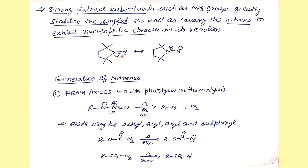When strong pi-donor substituents such as NH2 (an amine) are attached to a nitrene, they can donate electrons to the nitrene. This stabilizes the singlet nitrene, as a result of which it can behave as a nucleophile — the nitrogen acquires a negative charge and acts like a nucleophile.